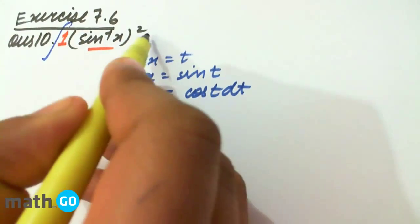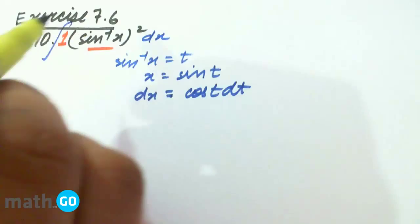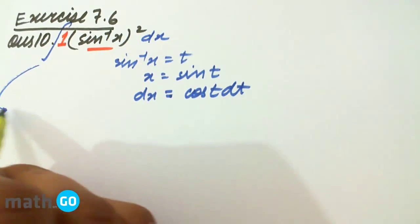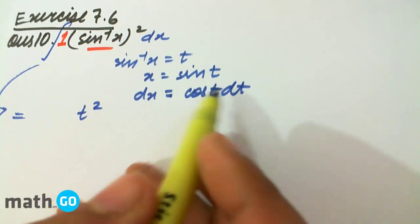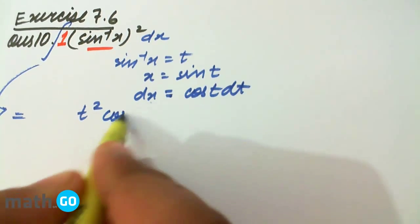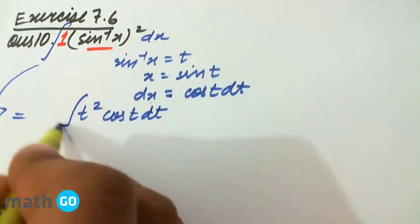So we get sin inverse x whole square, that is t square, and cos t dt in this integral. Simply applying the formula.